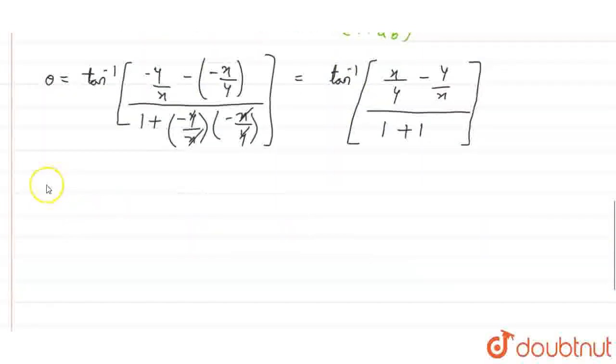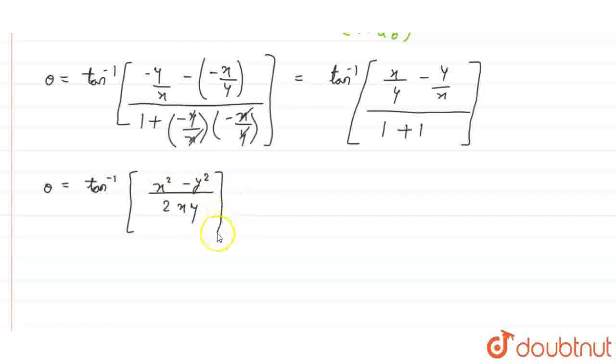Finally, theta comes out to be tan inverse of, we cross multiply the numerator, we get x square minus y square by 2xy. Now the angle between the two curves can be calculated as tan inverse of x square minus y square divided by 2xy. Thank you.